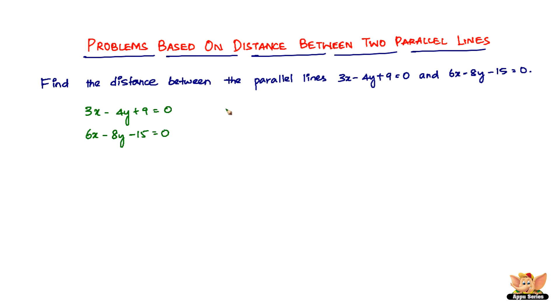The formula to find the distance between two parallel lines is given by mod of c1 minus c2 divided by square root of a square plus b square. But you do see that both equations have different values of a and b.